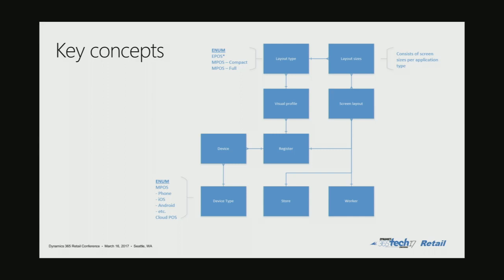Going in this direction, we can see the screen layout entity. The screen layout can be assigned to the register, the store, or the worker — that's existing capability — where it basically goes from a default. If it's set at the store, everyone will use that one, unless it's set at the register level, then register will override store, or if it's set at the worker level, which will override any of those.